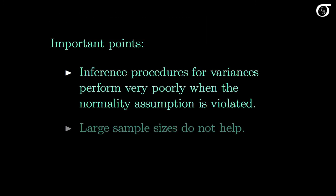Let's look at two important points from the simulations. Inference procedures for the ratio of population variances perform very poorly when the normality assumption is violated. For distributions that have high kurtosis, the coverage probabilities can be much less than the stated confidence level, making our reported results very misleading. Recall that in two-sample inference procedures for means, violations of normality became less problematic as sample sizes increased. But that is not the case for variances — violations of the normality assumption are just as problematic for large sample sizes. In fact, the coverage probabilities get worse for large sample sizes, moving farther from the stated value.